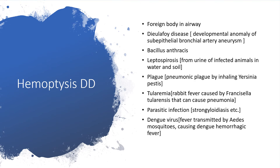Still on possible differential diagnoses of hemoptysis: foreign body aspiration could be the cause, particularly in the younger age group, when they swallow something and start coughing. The Dieulafoy disease — a developmental anomaly of subepithelial bronchial artery aneurysm — could also be the cause.